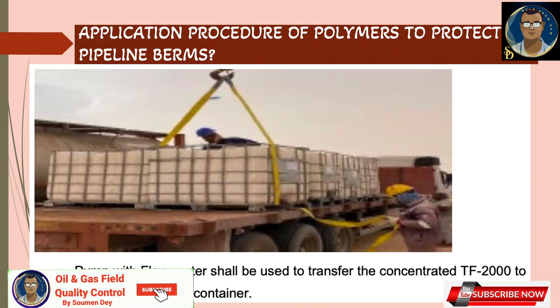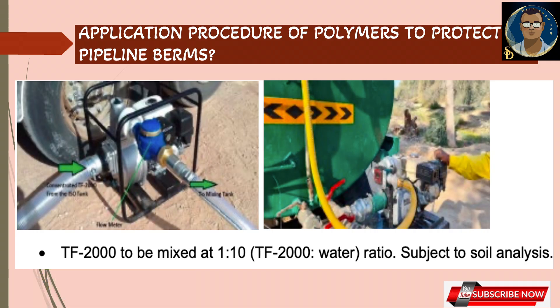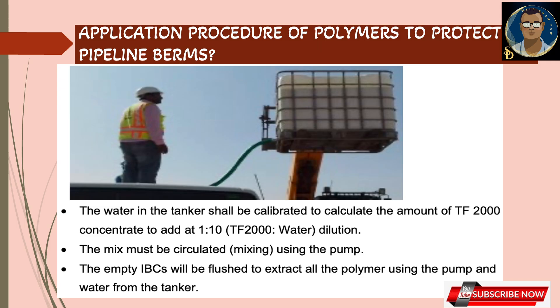Before starting the polymerization, preparation of the chemical — meaning mixing with water — is very important. A pump with a flow meter shall be used to transfer the concentrated TF-2000 (used here as an example product name) to the mixing or spraying container. The mix ratio is 1 to 10: if TF-2000 is 1 part, then water should be 10 parts, subject to soil analysis — different soil types may require different ratios. The water in the tanker should be calibrated to calculate the amount of TF-2000 needed. One part of TF-2000 to 10 parts of water for dilution. The mix must be circulated using the pump. Empty tanks will be flushed and all polymer extracted using the pump and water from the tanker.